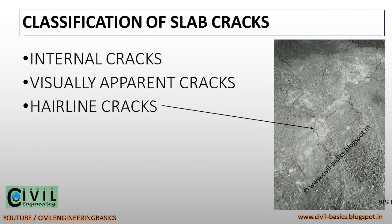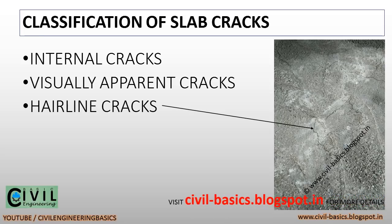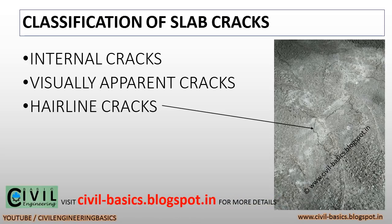Now let's see the classification of slab cracks. There are mainly three types of slab cracks. First is internal cracks, which occur inside the slab. Second is visually apparent cracks. And third is hairline cracks. You can see the hairline crack photographs on the right side, in which you can clearly see the cracks.